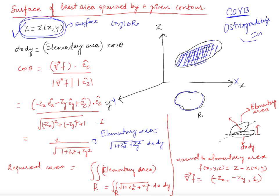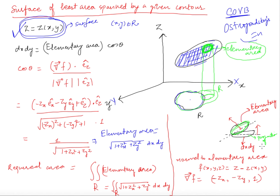If I know a small elementary area here, the total surface area will be the integral - we sum these small elementary areas to find the total surface area. We want to find an elementary surface area on this surface. If you project that elementary surface onto the XY plane, you have this elementary surface and its projection on the XY plane.